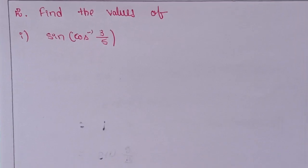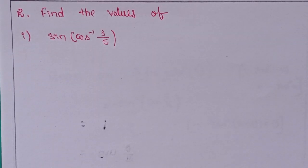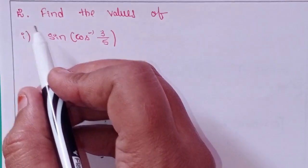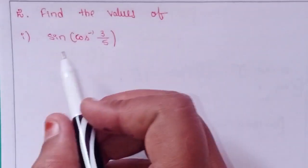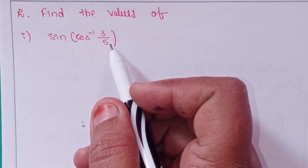Hi viewers, this is Shahin and welcome to my channel. Today we will discuss Intermediate First Year 1A, Chapter 8: Inverse Trigonometric Functions, Exercise 8a, first problem, second problem — find the values. First one: sine of cosine inverse 3 by 5.